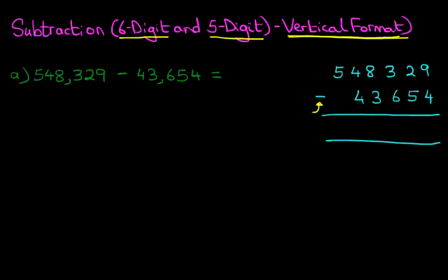As always, we start with the column on the right-hand side first. We've got 9 minus 4. 9 minus 4 is 5. Okay, nice easy one to start with.